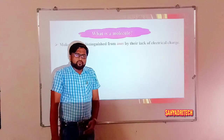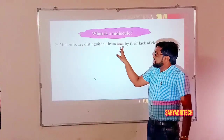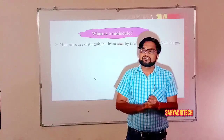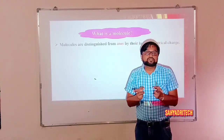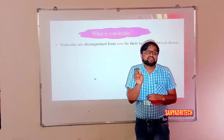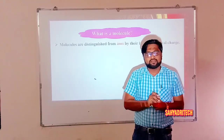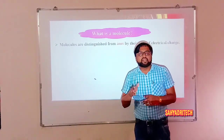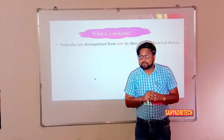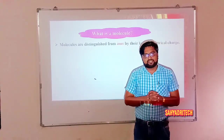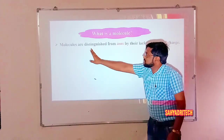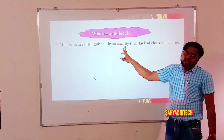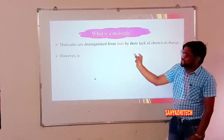We also have other chemical species referred to as ions. Ions are also chemical species, but the difference is that ions carry a net positive or net negative charge. Molecules, on the other hand, are neutral species. So we can distinguish molecules from ions by their lack of electrical charge — molecules do not carry any charge, but ions carry charge.